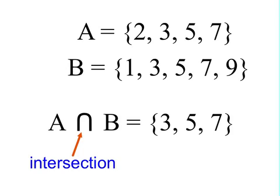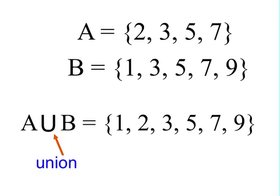Intersection is when you take two or more sets and find the things that they have in common. And here's something called union. It's a similar symbol, only it's right-side up, so the symbol looks like a U.